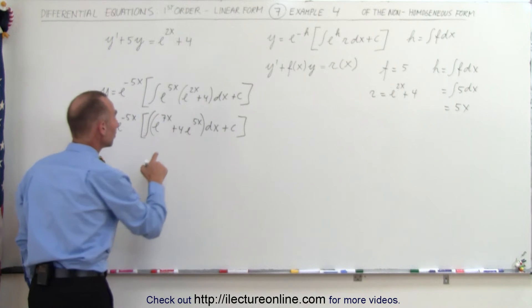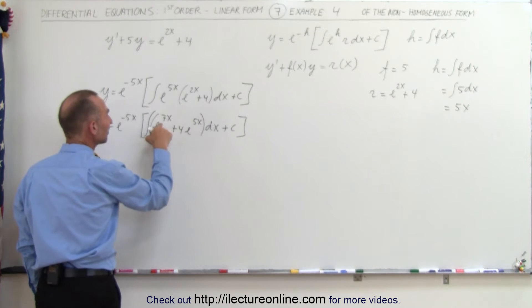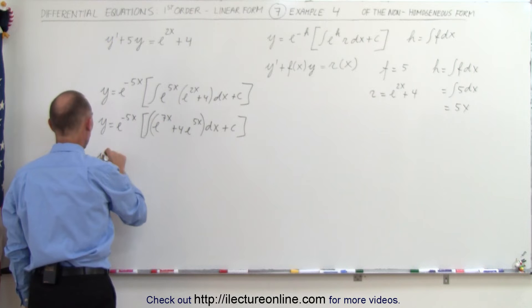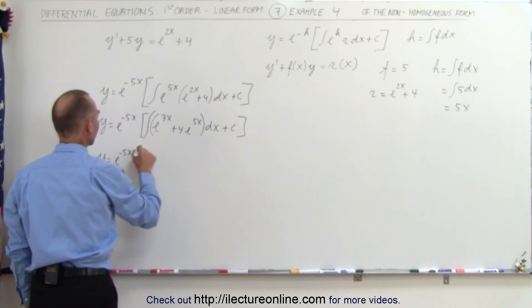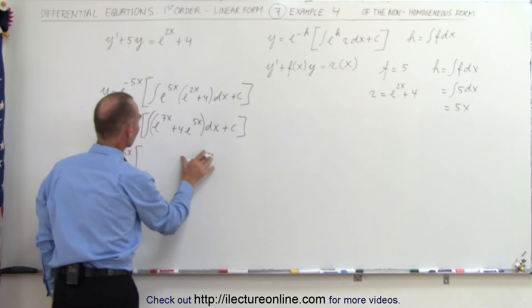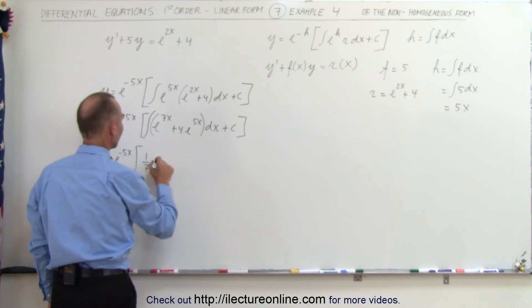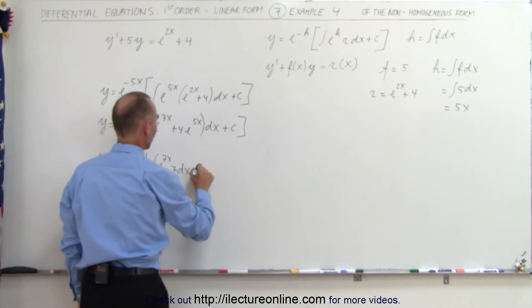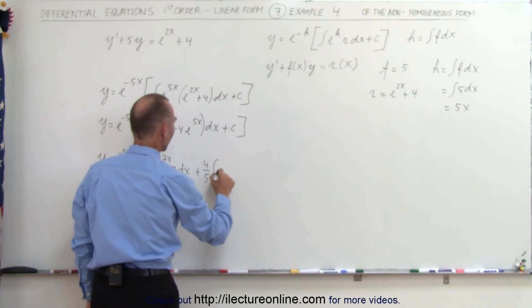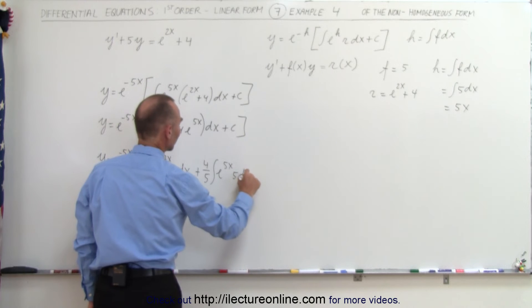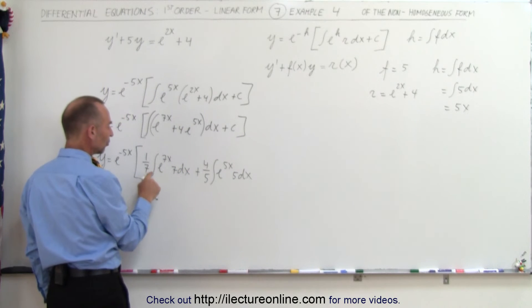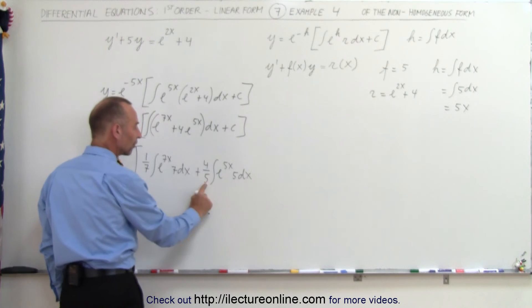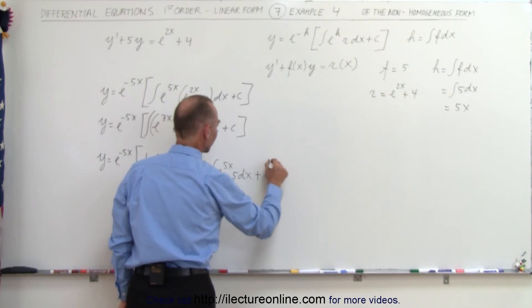In order to integrate this, I need the proper differentials. The differential of e to the 7x would be 7 dx, and the differential of e to the 5x would be 5 dx. So y is equal to e to the minus 5x times: 1/7 times the integral of e to the 7x times 7 dx, plus 4/5 times the integral of e to the 5x times 5 dx. I multiplied and divided by 7 and by 5 respectively to get the correct differentials, plus a constant of integration.